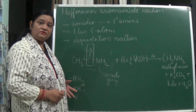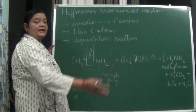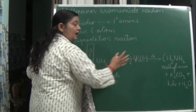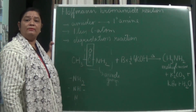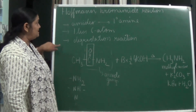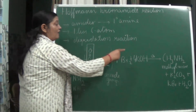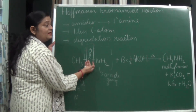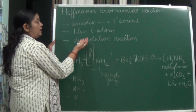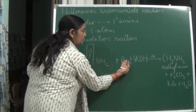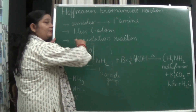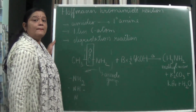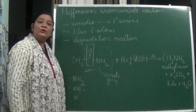This reaction is very important for competitive exams. Remember: adding bromine and KOH to an amide gives a primary amine. Three key points: the amide gives a primary amine; the product has one fewer carbon atom; and degradation takes place — the C=O bond is broken and removed when reacting with Br₂ and KOH.